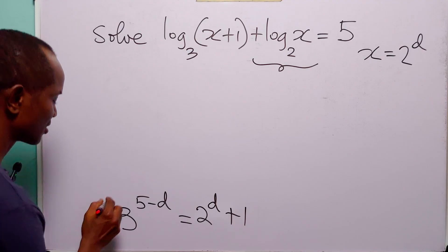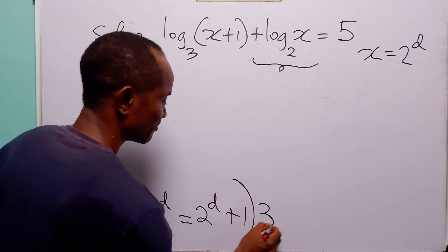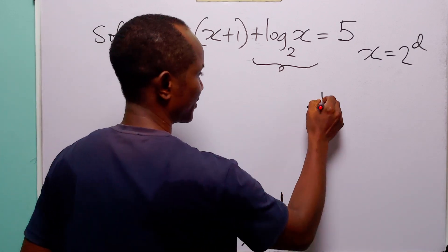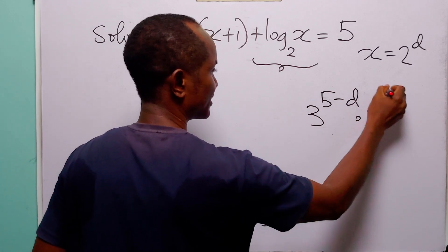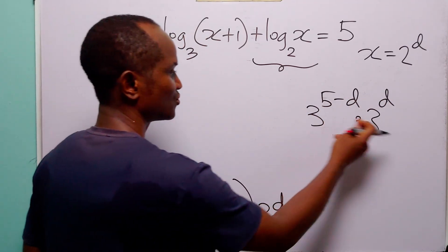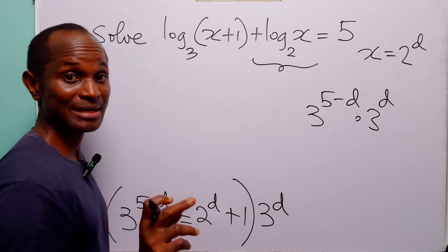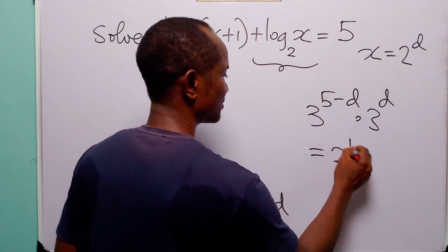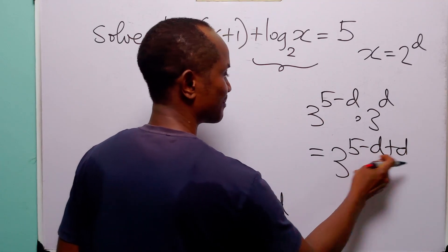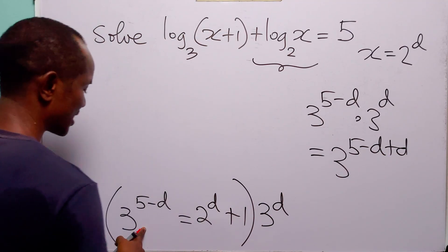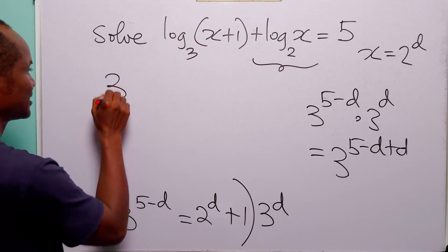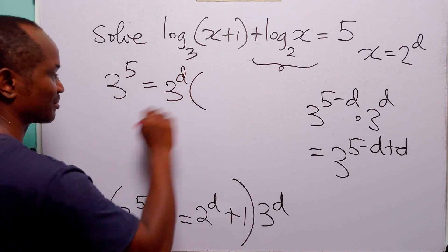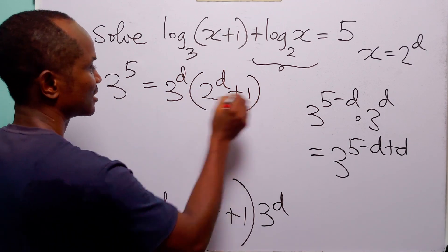To simplify this equation, let us multiply both sides by 3 to the power d. On the left, we have 3 to the power 5 minus d multiplied by 3 to the power d. When two numbers with the same base multiply, we simply add the exponents, giving 3 to the power 5 minus d plus d. Minus d plus d equals 0, so on the left-hand side we have 3 to the power 5, and this equals 3 to the power d multiplied by 2 to the power d plus 1.